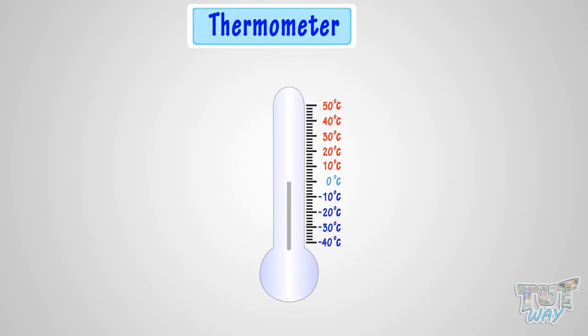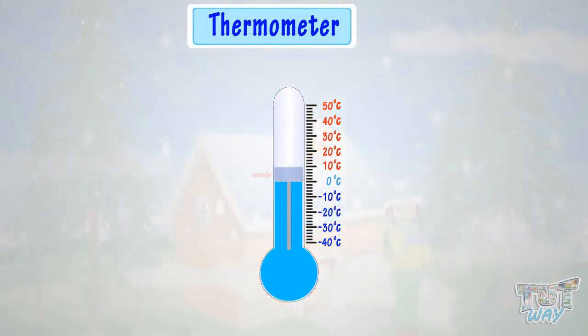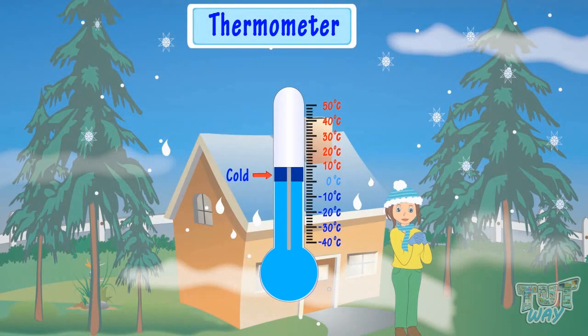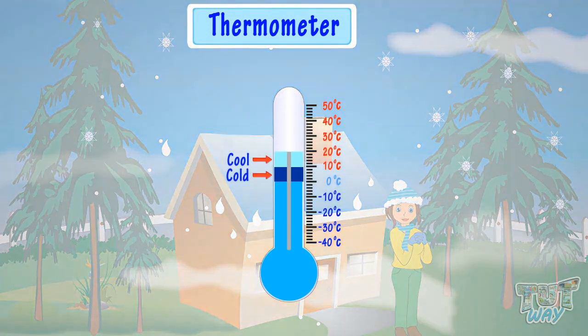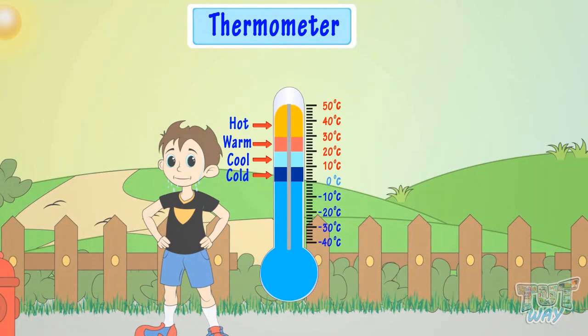Also not to forget, below zero degrees Celsius or temperature in minus is very very cold or ice cold. Zero to ten degrees Celsius is considered cold. Ten to twenty degrees Celsius is considered cool. Twenty to thirty degrees Celsius is warm. And thirty degrees Celsius and up is hot. Good.